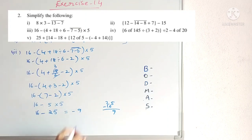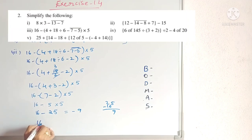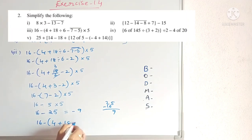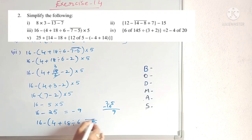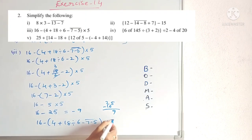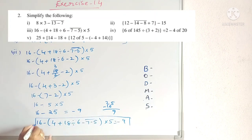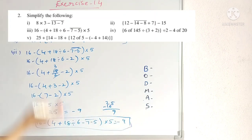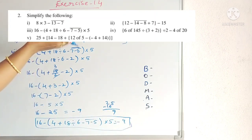So 16 − (4 + 18 ÷ 6 − ‾7 − 5‾) × 5 = −9. Note: in our textbook there is a printing mistake above this bar; the correct expression is as shown.